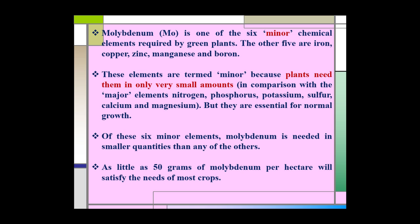Molybdenum is one of the six minor chemical elements required by green plants. The other five minor elements are iron, copper, zinc, manganese, and boron. These elements are termed minor because plants need them in very small amounts in comparison to major elements such as nitrogen, phosphorus, potassium, sulfur, calcium, and magnesium. But these minor elements are essential for normal plant growth. Of the six minor elements, molybdenum is needed in the smallest quantities — as little as 50 grams per hectare will satisfy the needs of most crops.